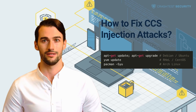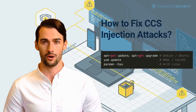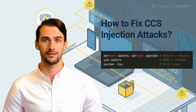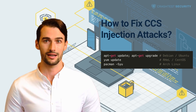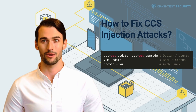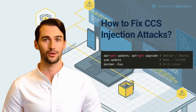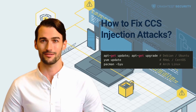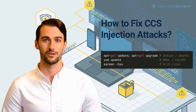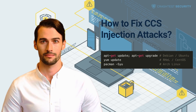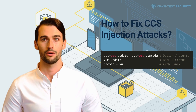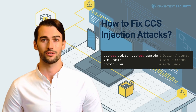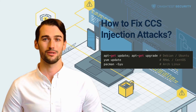The best way to fix the CCS injection vulnerability is to update OpenSSL to the latest version available. Versions that address the CCS injection vulnerability were 1.0.0M and 1.0.1H. However, all these versions are already considered old and are not maintained, so it is better to update to the latest versions currently being used and supported.